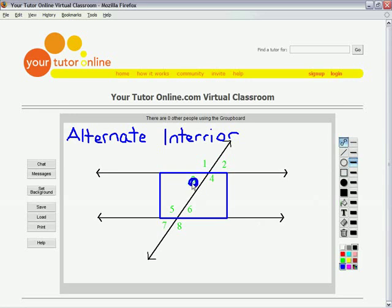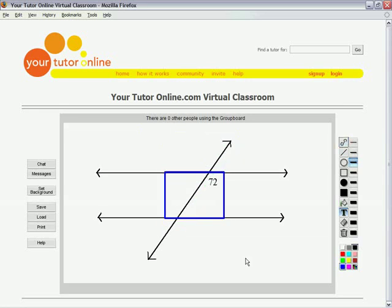Let's start with angle 3. The alternate interior angle is 6, because we cross the line and go to the other side of the box. Alternate interior angles are also congruent.